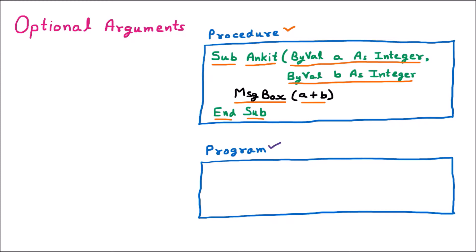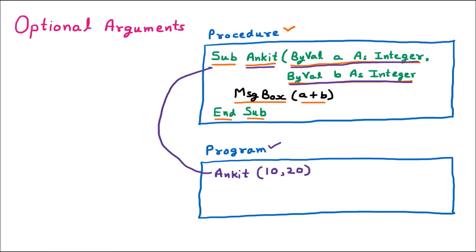Now in the main program we want to call the procedure. The procedure name is Ankit and it takes two arguments. We pass argument one as 10 and argument two as 20. This calling of the procedure provides the values 10 and 20 to a and b respectively. Their sum, a plus b, is 30, which is shown in the message box. This is the normal procedure call.